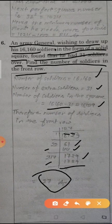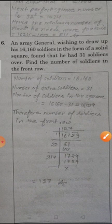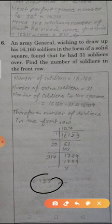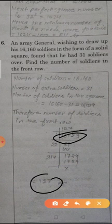So 127 is the square root of that number. So number of soldiers in the front row is 127.